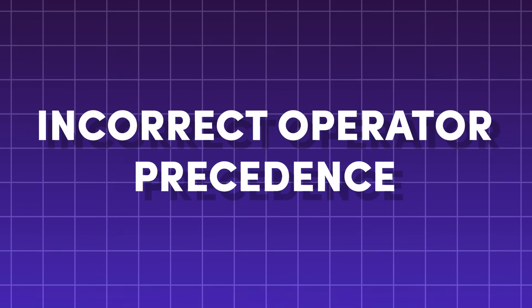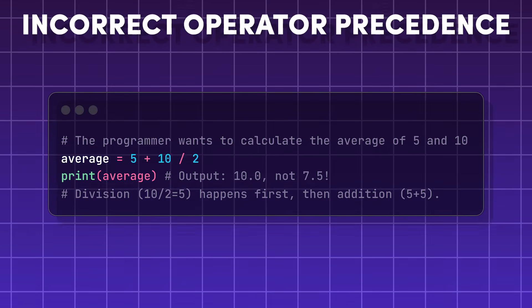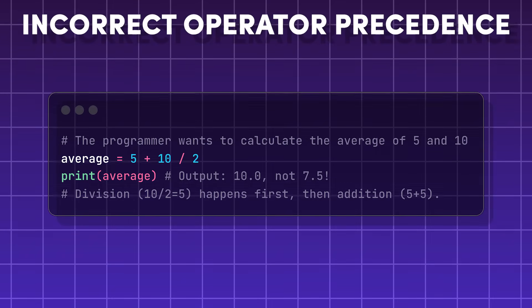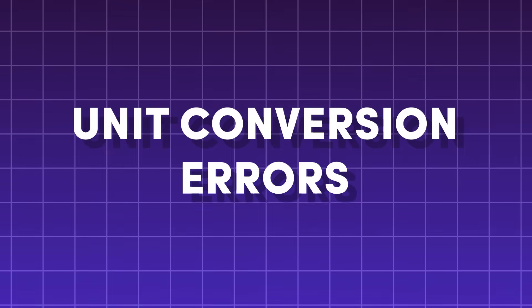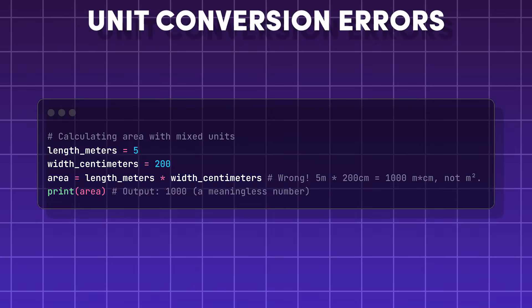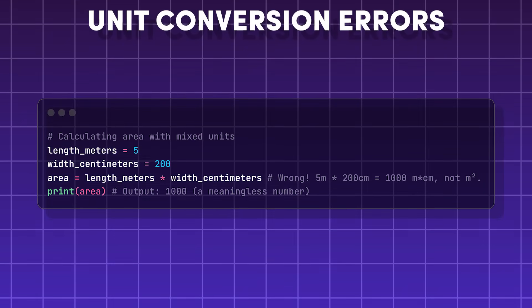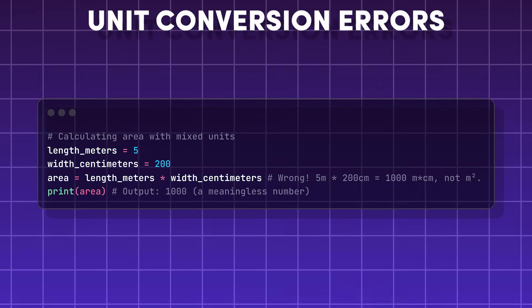Incorrect operator precedence — basically, incorrect use of order of operations resulting in an incorrect answer. Unit conversion errors — usually caused by doing calculations between different units or scales without converting them first.